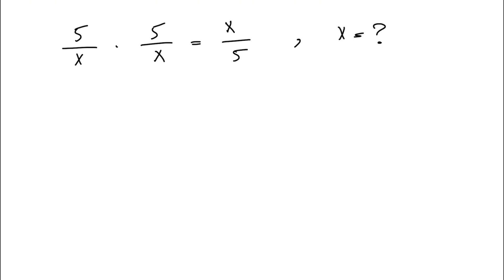What we have on the left side of the equation is basically 5 times 5 divided by x times x, and on the other side we have x over 5.